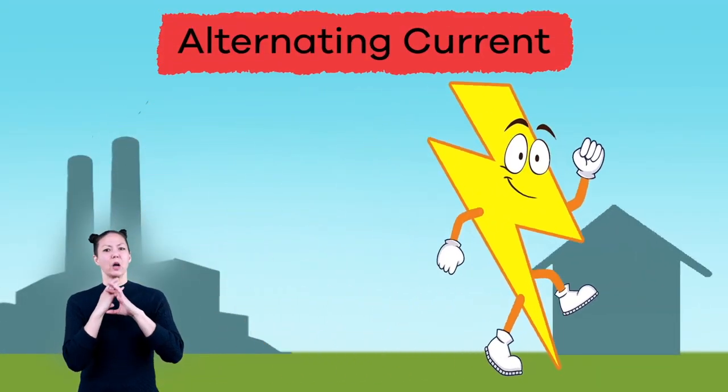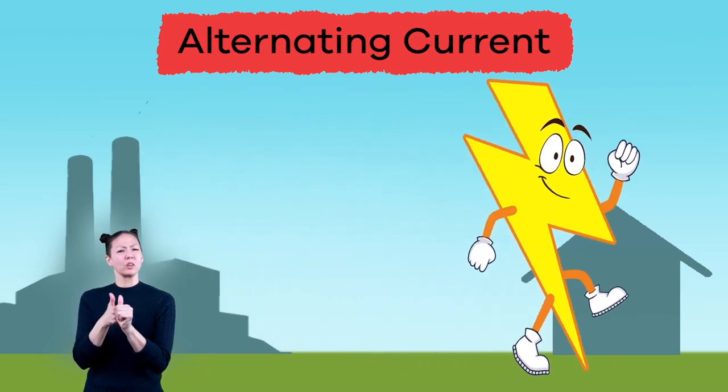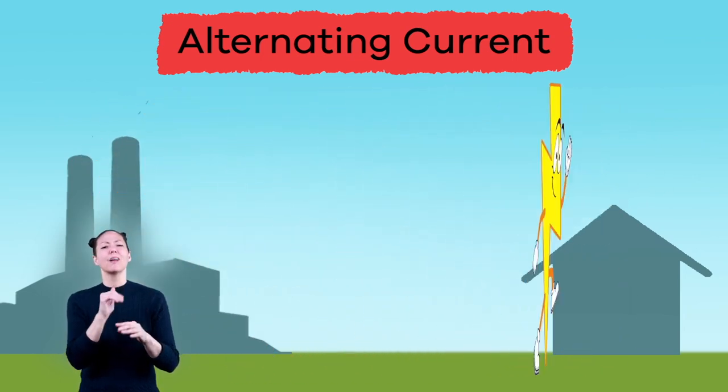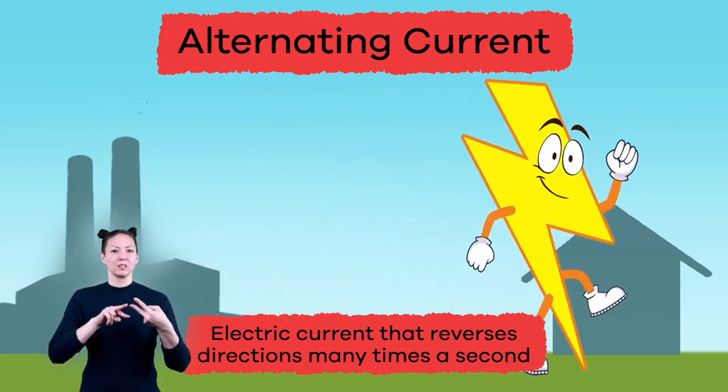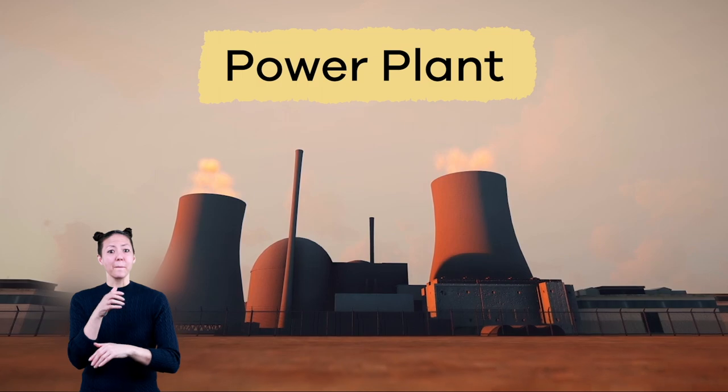Now, let's learn about alternating current. Alternating current is an electric current that reverses directions many times a second. This power comes from power plants.